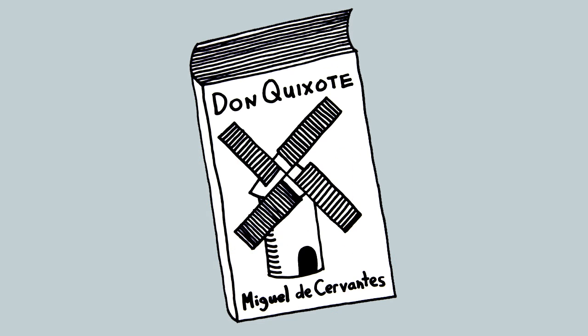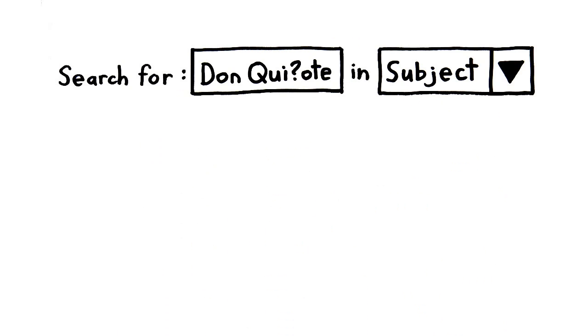Let's say I'm interested in the book Don Quixote — not in reading Don Quixote itself, but rather in stuff written about the book Don Quixote. So I'll search for Don Quixote as a subject heading.